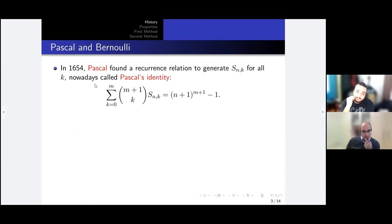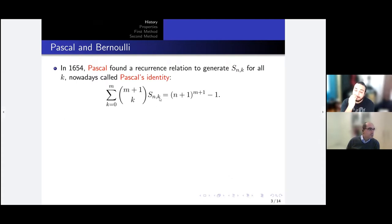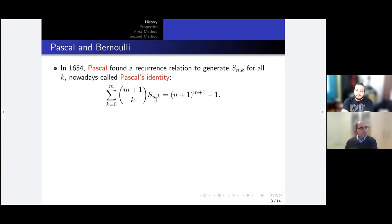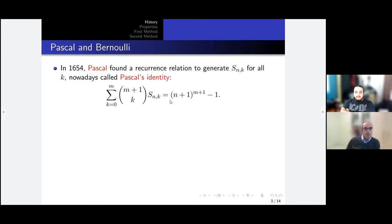In 1654, Pascal found a recurrence relation to generate these expressions, which we today call Pascal's identity. For example, putting k = 0 gives immediately an expression for S(n,0), which is just n since you're summing 1+1+...+1. Putting k = 1 gives an expression involving S(n,0) and S(n,1), from which you find S(n,1); putting k = 2 gives you S(n,2), and so on. This recurrence relation gives you every formula you want.